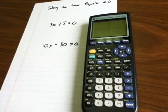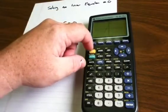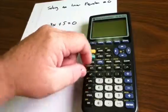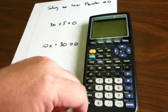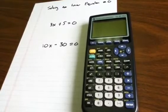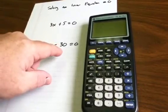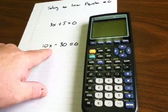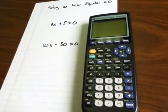Now let's look at the second example. We'll quit out of this, hit Second Quit, hit Y=, clear out the old equation, and put in the new equation: 10x - 30 = 0.